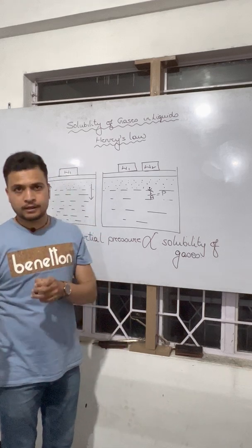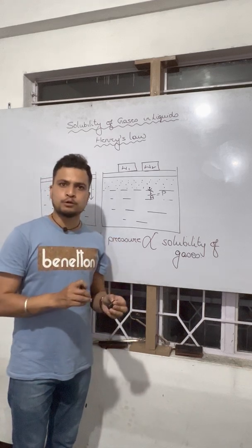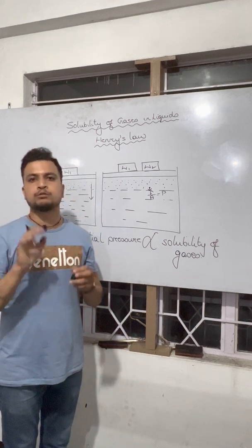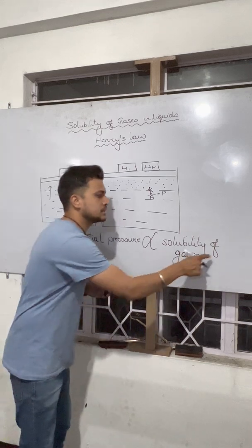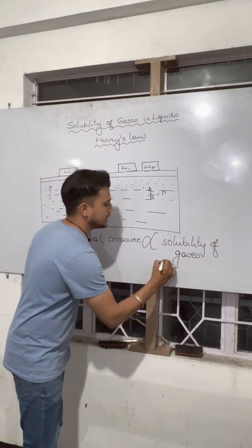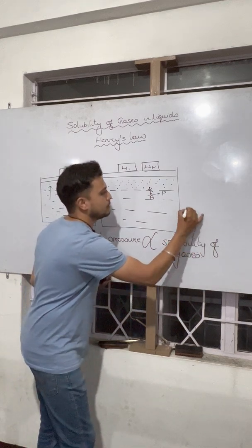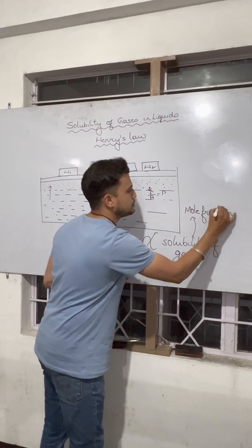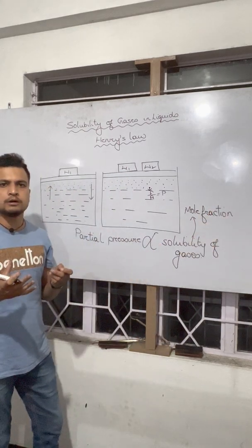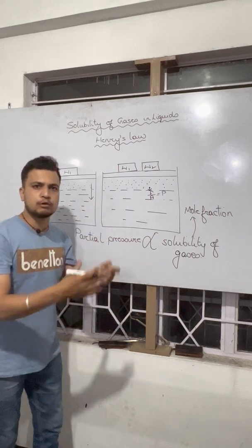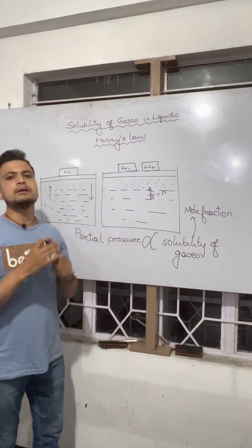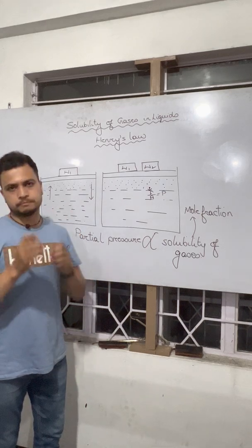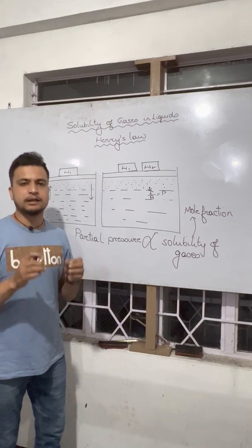The gas in vapor phase is directly proportional to the mole fraction of that gas in the solution. When we say mole fraction, the solubility in Henry's law is expressed as mole fraction. In simple words, if the gas applies more pressure, then the mole fraction or the solubility of the gas will always be higher. That is what we mean by Henry's law.